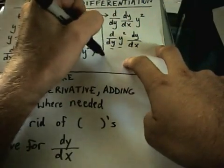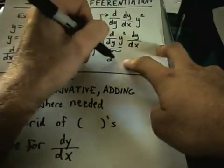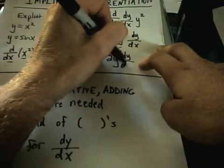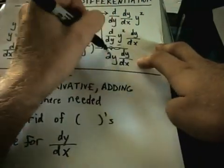So if I take the derivative, this part, I'm going to get 2y, but notice there's a dy dx left hanging out.